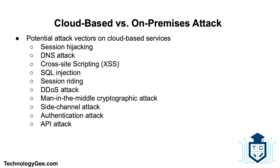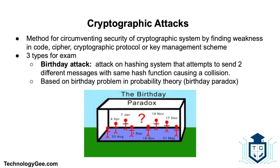An authentication attack — authentication is a weak point in hosted and virtual services and is frequently targeted. There are many ways to authenticate users, such as based on what a person knows, has, or is. The mechanisms used to secure the authentication process and the method of authentication used are frequent targets of attackers. API attacks — APIs are often configured insecurely, which can result in an attacker taking advantage of API misconfigurations to modify, delete, or append data in applications or systems in cloud environments.